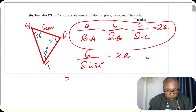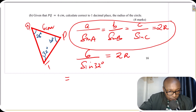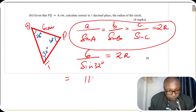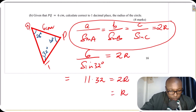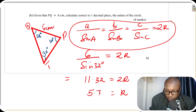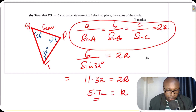So 6 divided by sine of 32 degrees equals 2R. Using a calculator, 6 divided by sine 32 gives 11.32, which equals 2R. Divide both sides by 2 to get R equals 5.66. Correct to one decimal place, the radius of the circle is 5.7 centimeters.